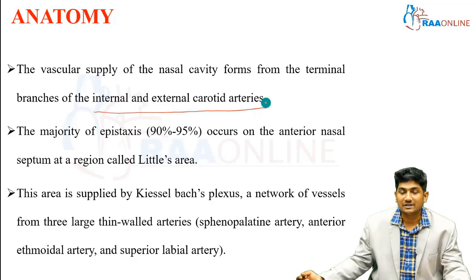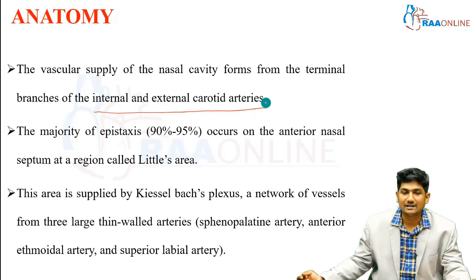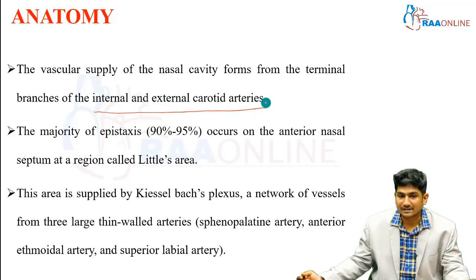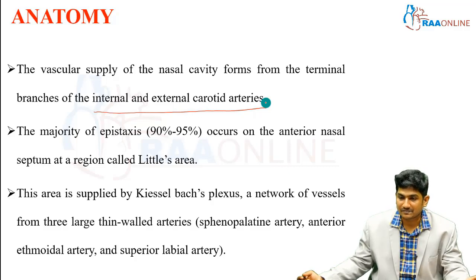The majority of epistaxis — nearly 95% — occurs on the anterior nasal septum at the region called Little's area. Little's area is supplied by Kiesselbach's plexus, which is a network of vessels formed by three large thin-walled arteries: the sphenopalatine artery, the anterior ethmoidal artery, and the superior labial artery.